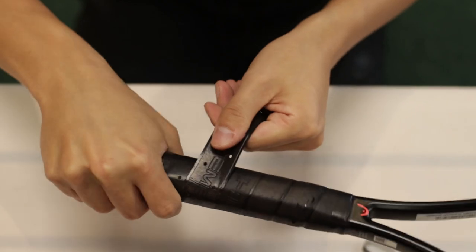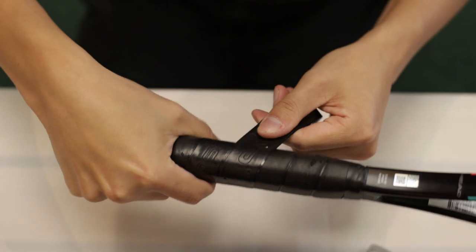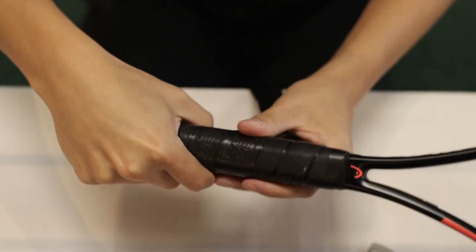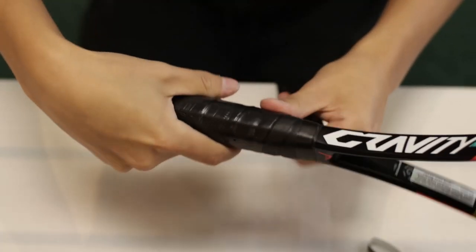So the guideline is about one-eighth of an inch overlap. You can go a little bit thicker overlap if you like a little bit more cushion, or a little bit thinner overlap if you like a thinner feel.